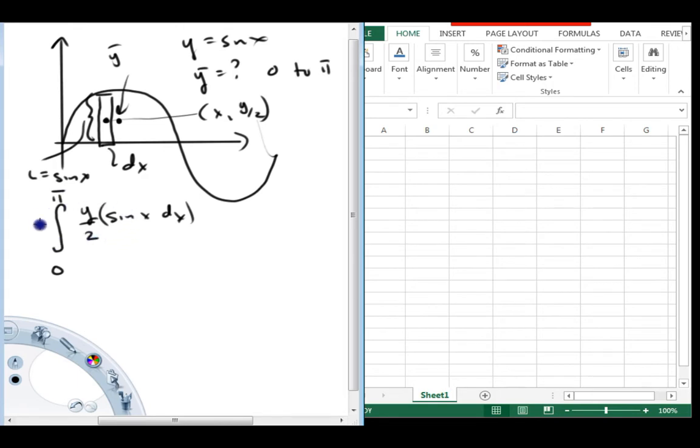Then what this is going to give us here, this is actually called the first moment of area. We need to divide out the total area, so we're going to divide that by integral sine x dx, and again zero to pi, and that will give us y bar, the coordinates for the centroid of the rectangle.